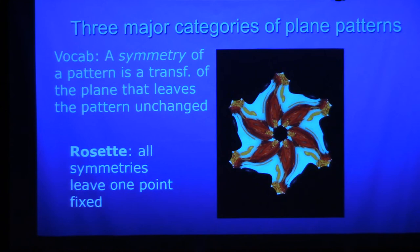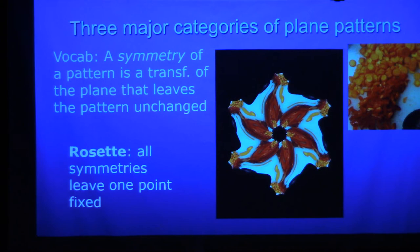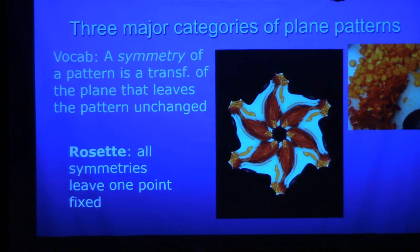This pattern is called a rosette because every symmetry of this pattern leaves one point unchanged, the point right at the center. And I made this one out of a photograph of carrots and bell peppers on a cutting board. I cut them up, thought they were beautiful, took a picture of them.